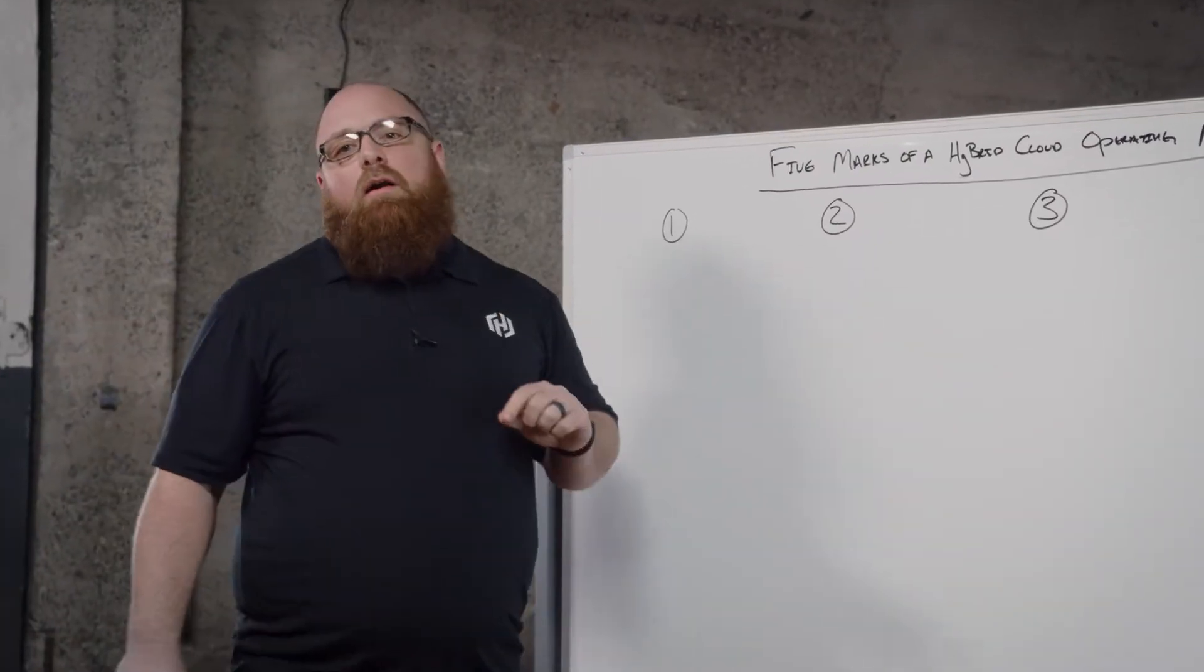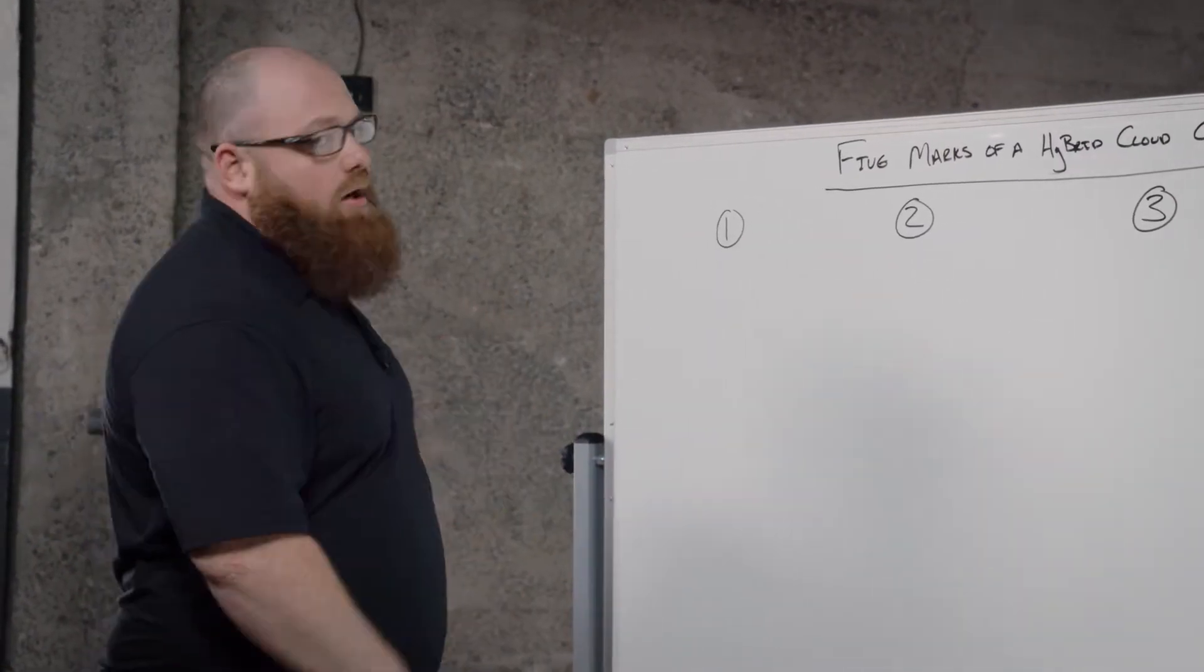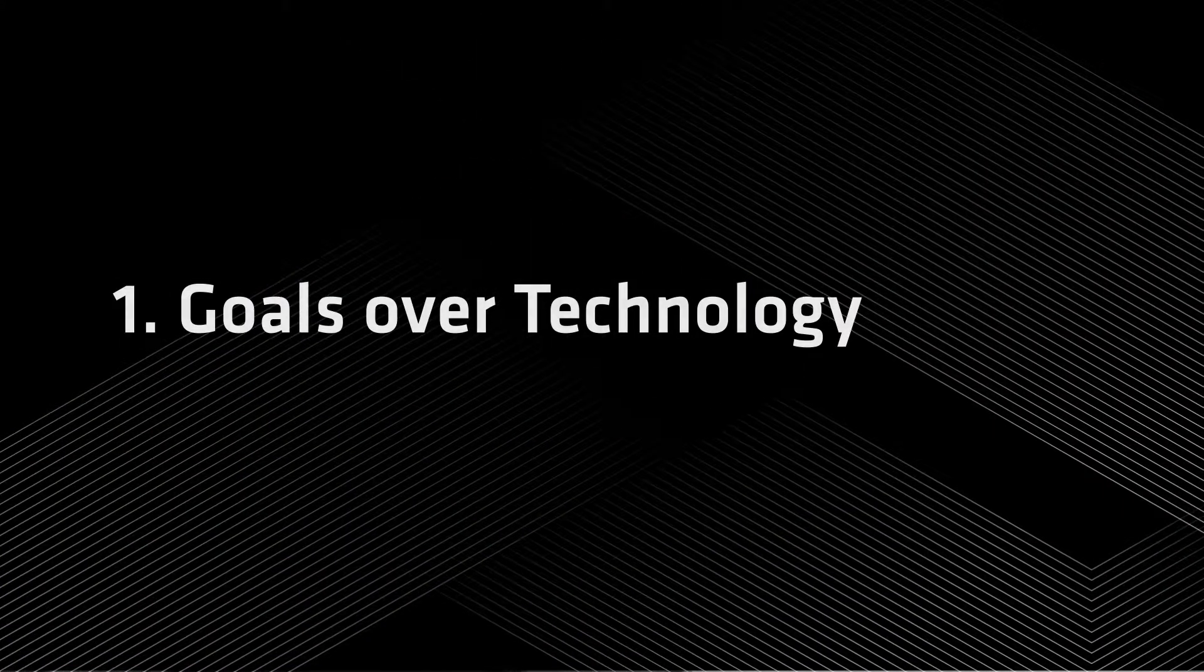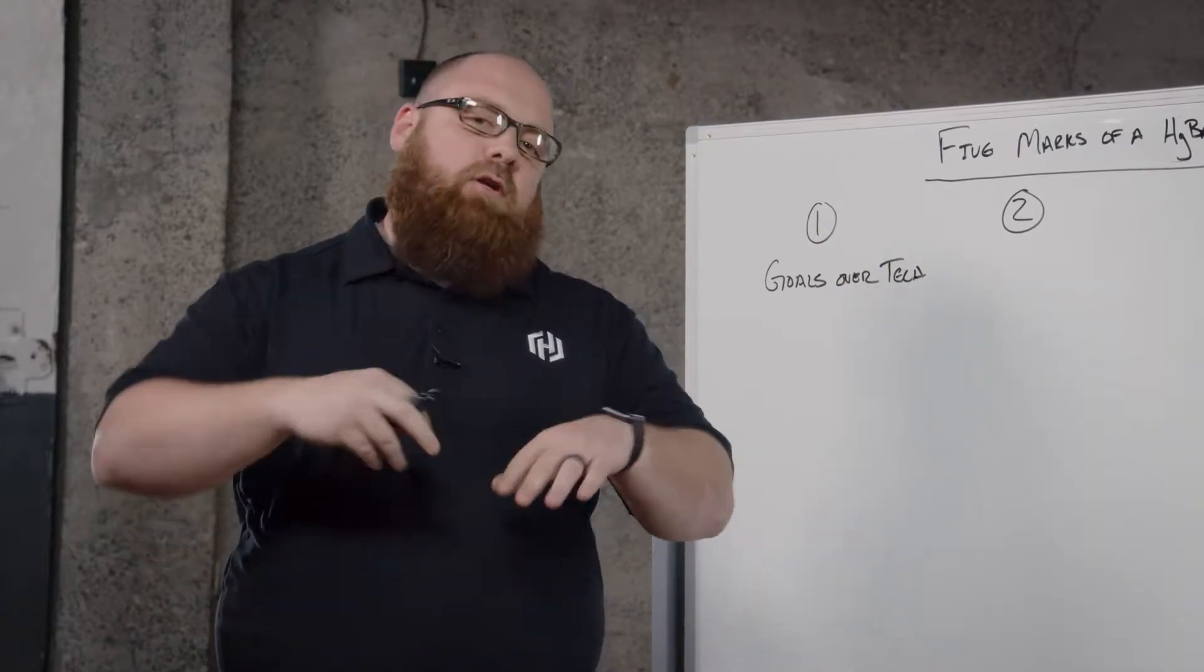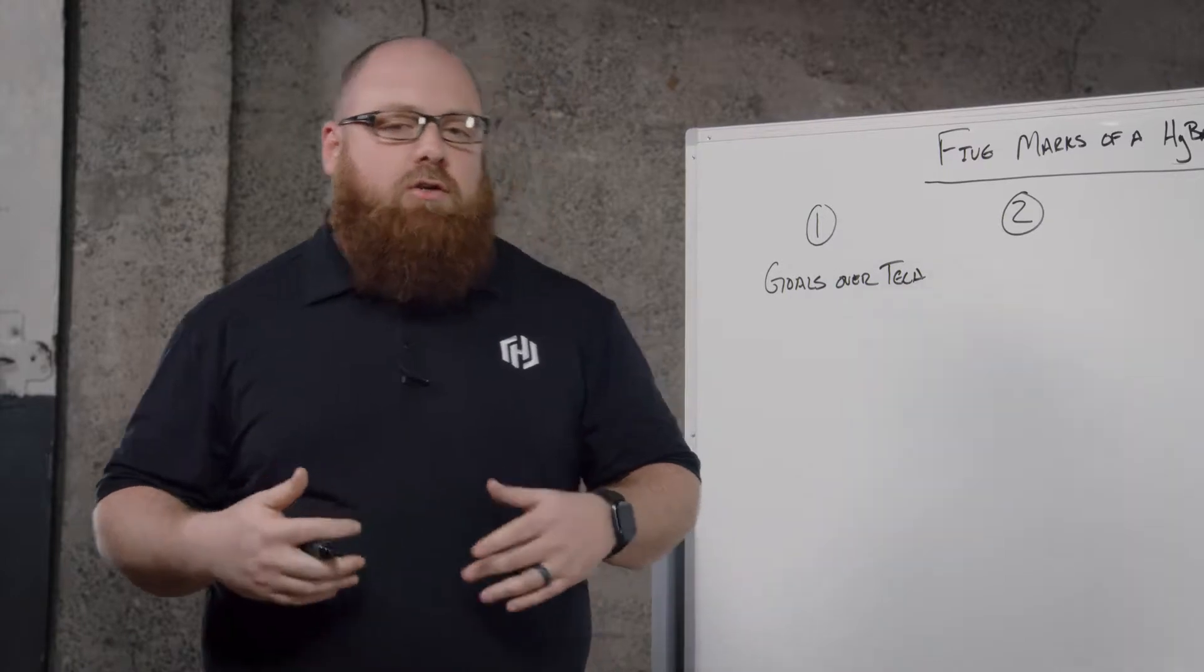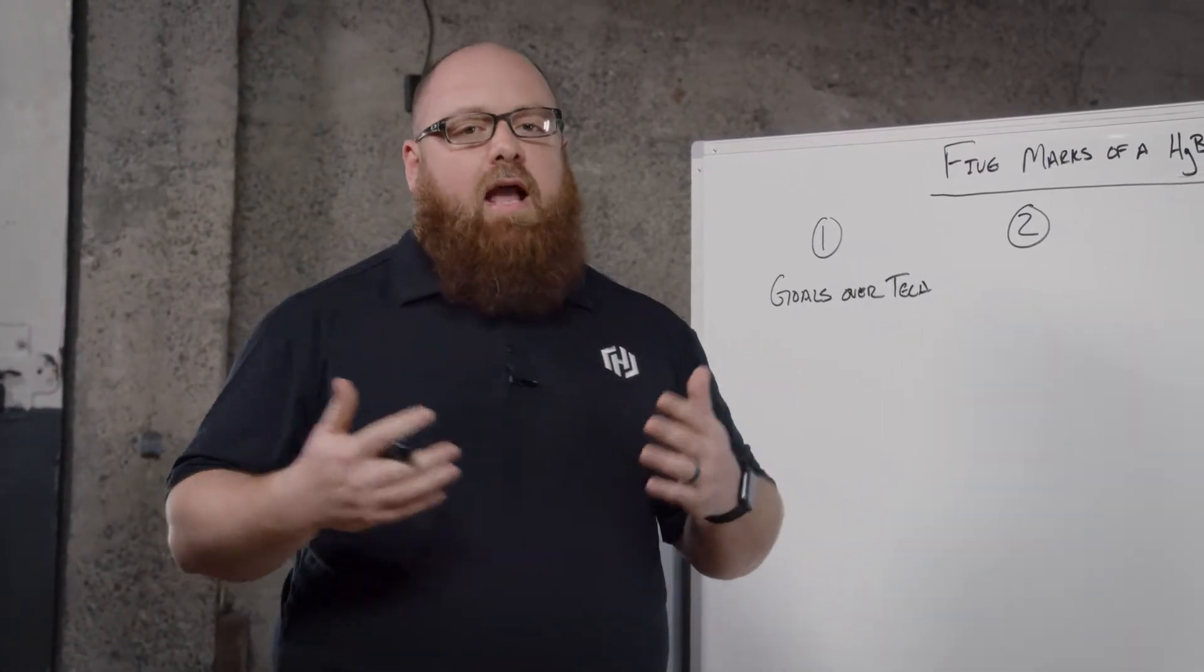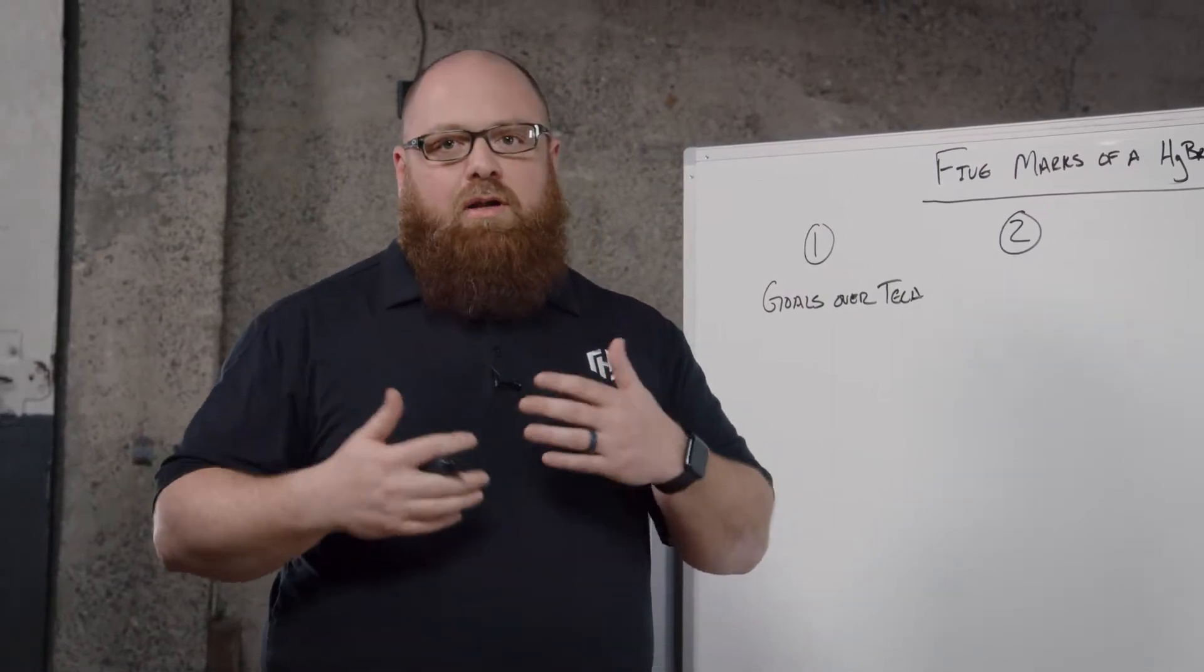So the first mark in a hybrid cloud operating model that you have to consider when you're going through this journey is goals over technology. A lot of times what ends up happening is that we focus on the technology that we want to choose and then we try to wrap those goals around it. And when you're really trying to transition to a hybrid cloud operating model, you have to really put what is my end state actually going to look like versus how is the technology going to influence that.